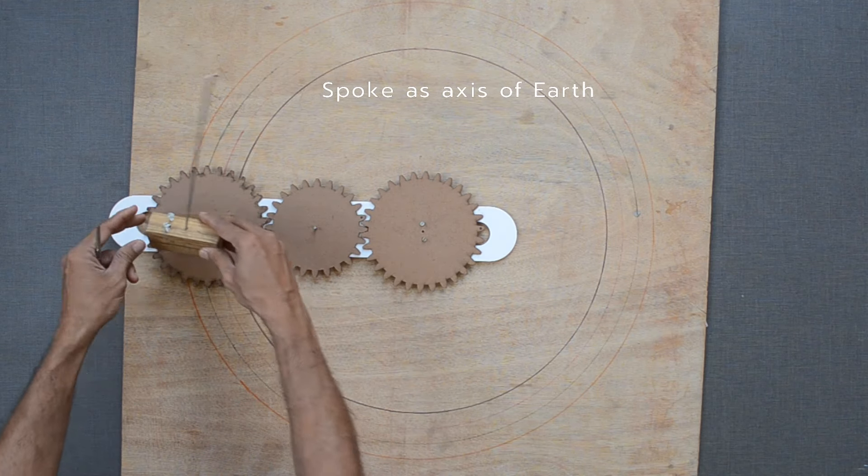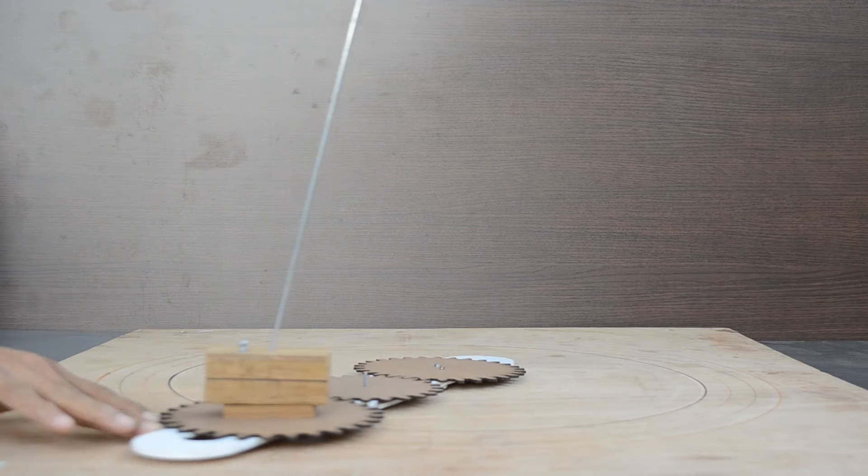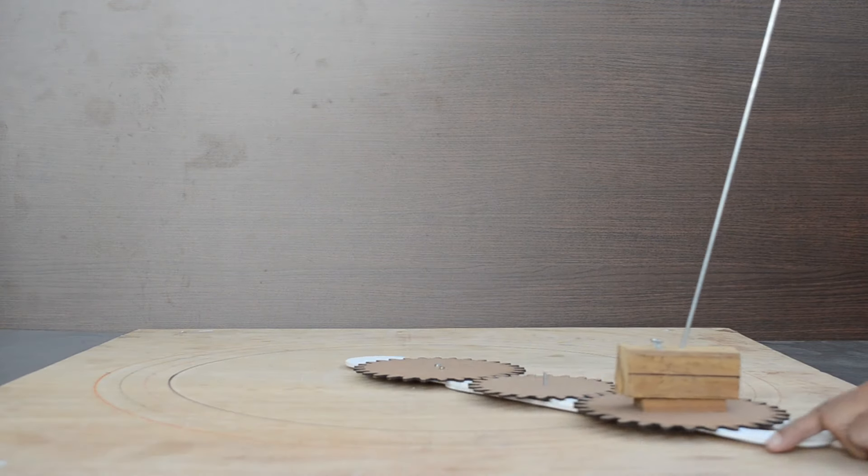Spoke acts as an axis of the Earth tilted at an angle. Observe the orientation of the axis as we rotate the plate.